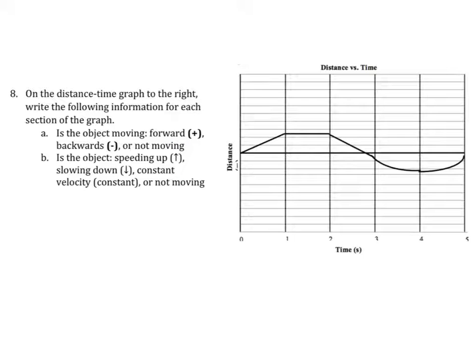With a position-time graph or distance-time graph, to determine if it's going forwards or backwards, we want to look at whether the line's headed up on the graph or down on the graph. Up is forwards, down is backwards.